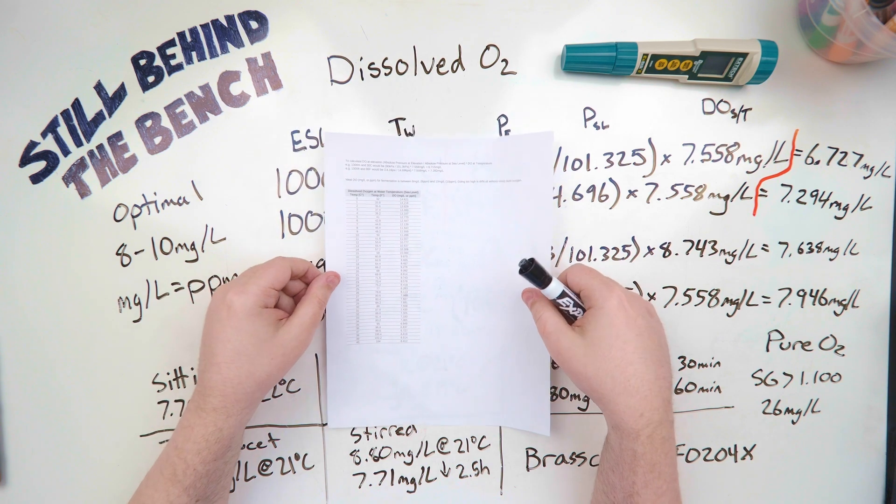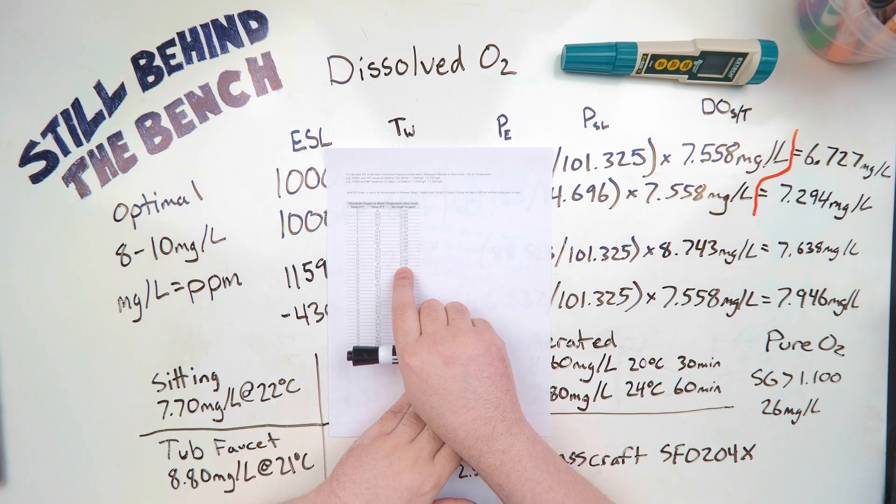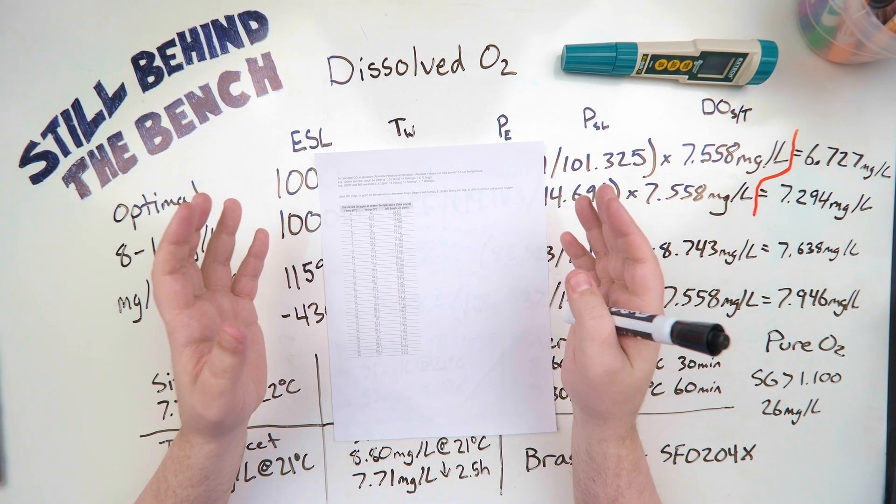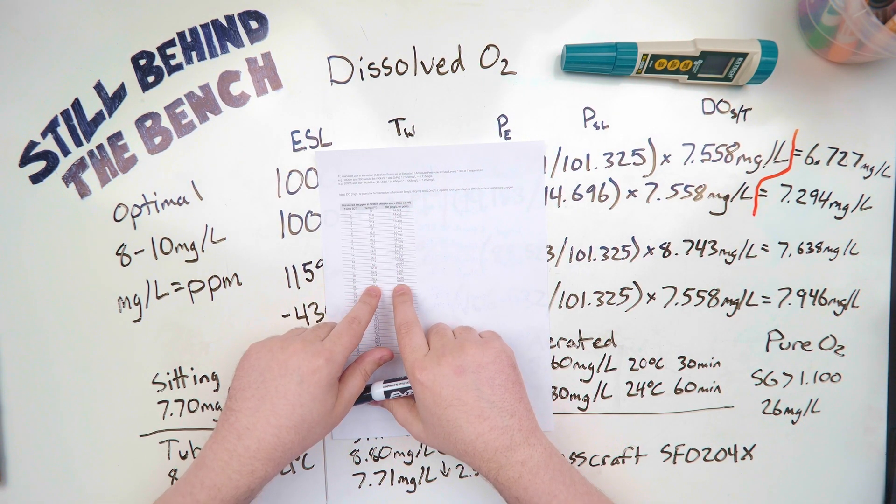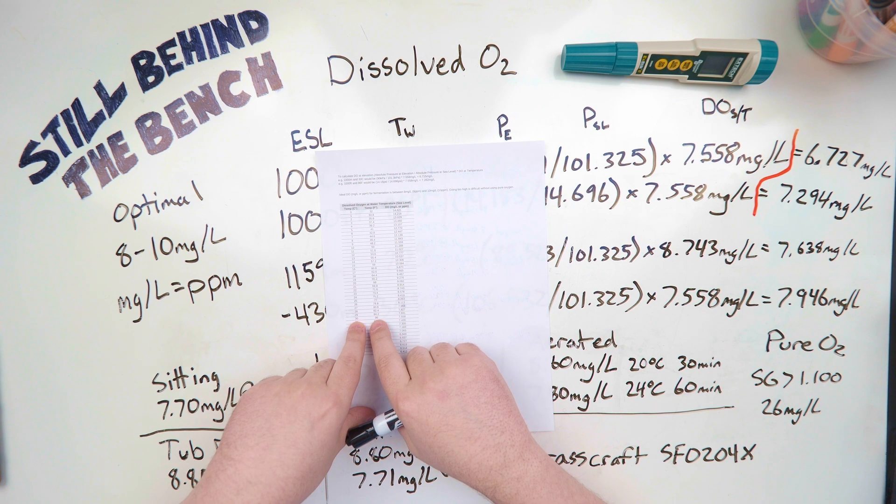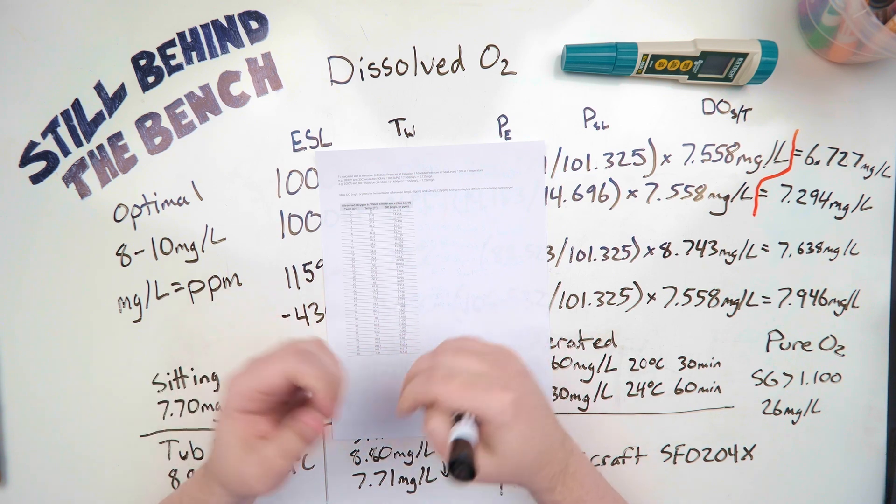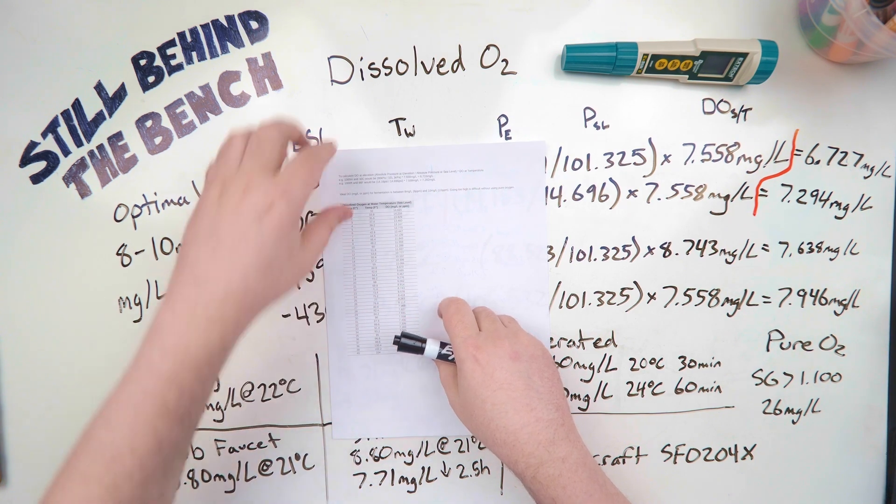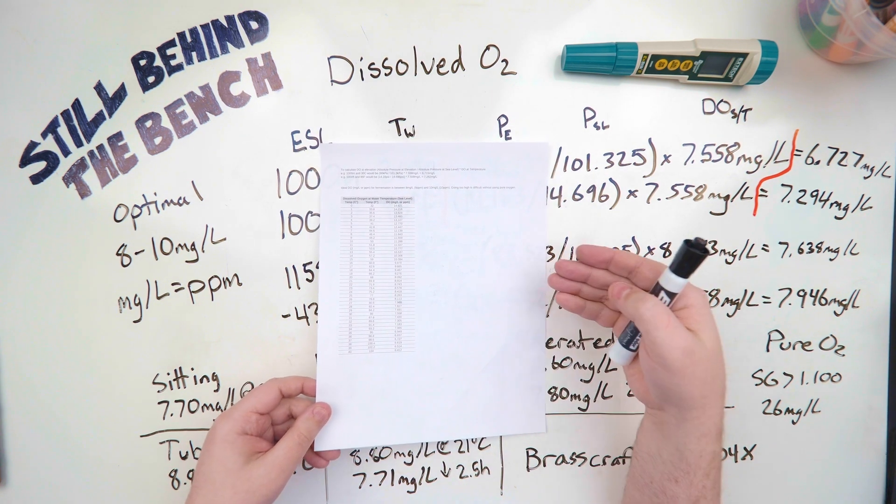All right so first we're going to be looking at this table here. What this table describes is essentially how much dissolved oxygen you can find in fresh water at sea level at a specific temperature. So if you live at sea level and you have a bucket of water and it's been sitting there all day, and the water is at 20 degrees celsius or 68 degrees fahrenheit, then there's going to be roughly 9.092 milligrams per liter or ppm of dissolved oxygen in that water. If the water is 30 degrees celsius or 86 degrees fahrenheit, then there's going to be 7.558 milligrams per liter or ppm of dissolved oxygen in it. So why is this important? Well we need to do some math and we need to use these values to help us out to figure out how much oxygen is available to us and determine whether or not we need to add more oxygen.